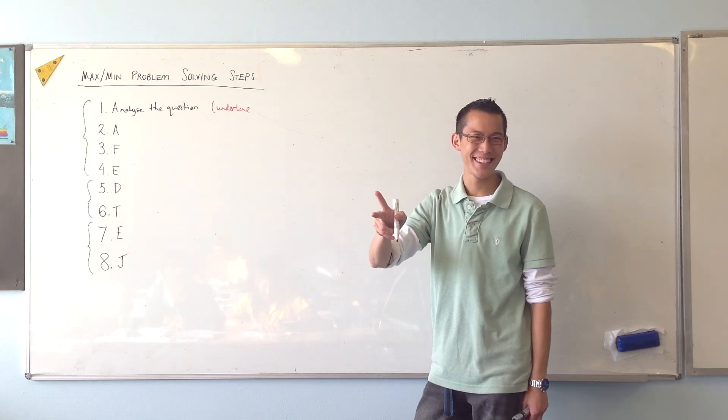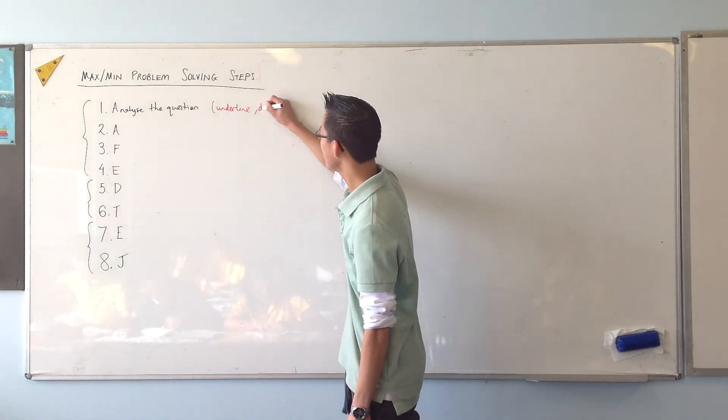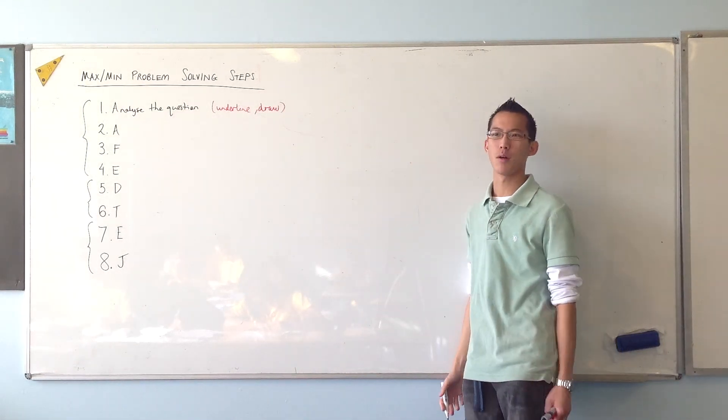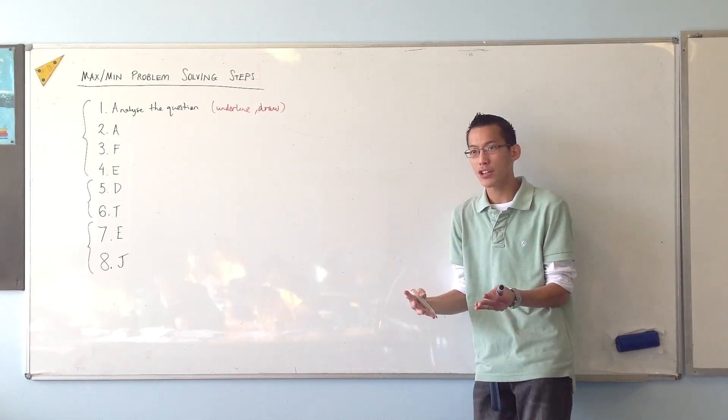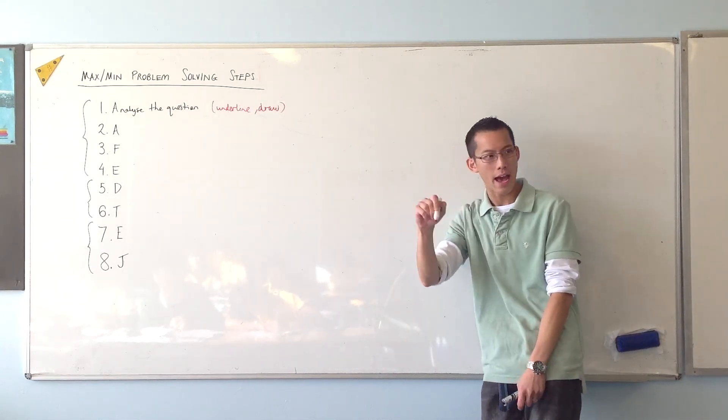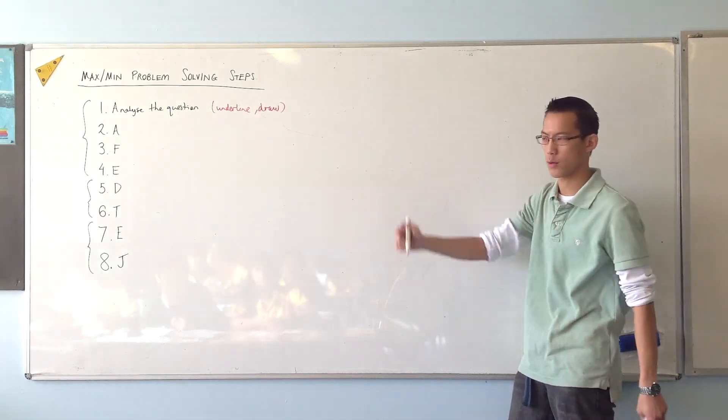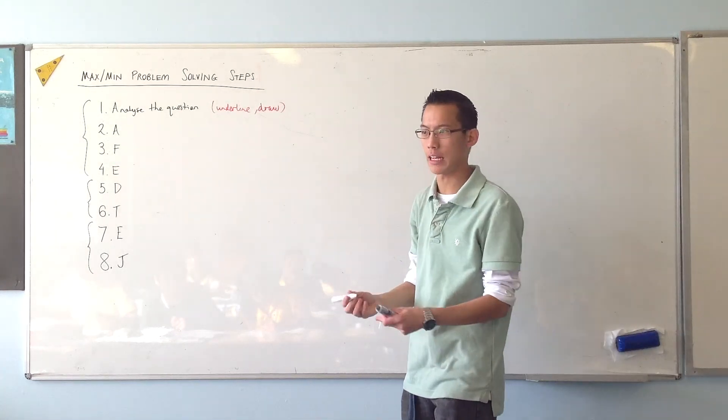The second thing I'm gonna do, where it applies, is I'm going to draw it. So sort of a lion's share of maximum problems are geometric in some way. We saw that yesterday with like the A4 piece of paper. Now you can picture it, but it's so much better if you actually have it drawn and then you can label it and say here's x, here's 20 minus 2x and so on. So that's what I do to just wrap my brain around what is this question getting at.